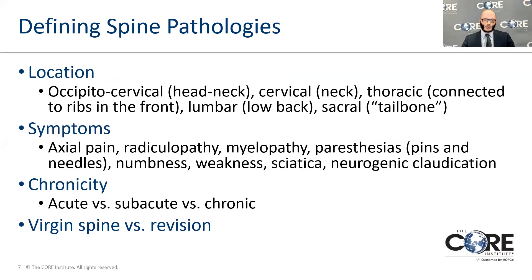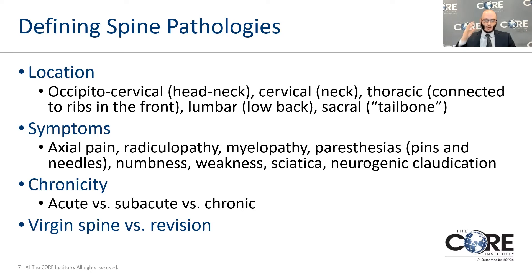When we talk about spine pathologies, we differentiate where the pathology is located, what symptoms it's causing, and importantly, how long the symptoms have been present. The occiput is another name for the skull, so occipitocervical refers to the junction of the head and neck. The cervical spine refers to the neck. The thoracic spine refers to the mid-back connected to the ribs. The lumbar spine refers to the lower spine, and the sacrum is the tailbone — the very bottom of the spine.